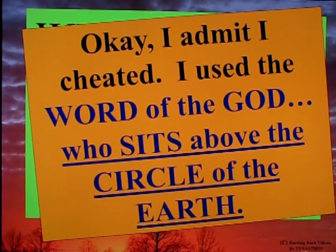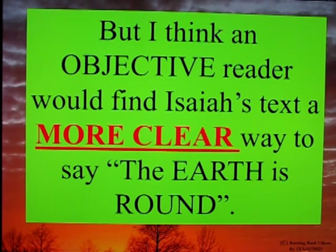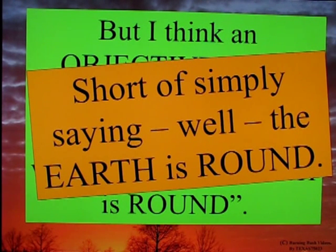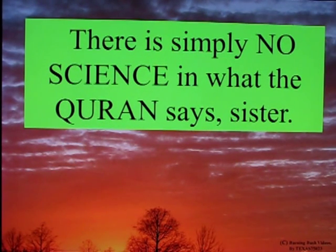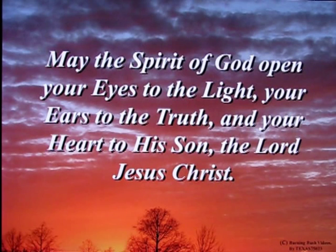Okay, I admit I cheated — I used the word of the God who sits above the circle of the earth. But I think an objective reader would find Isaiah's text a more clear way to say the earth is round, short of simply saying the earth is round. There is simply no science in what the Quran says, sister, and Islam should be ashamed for the very poor thinking they put into defending their deity, their Allah. May the Spirit of God open your eyes to the light, your ears to the truth, and your heart to his Son, the Lord Jesus Christ. Amen.